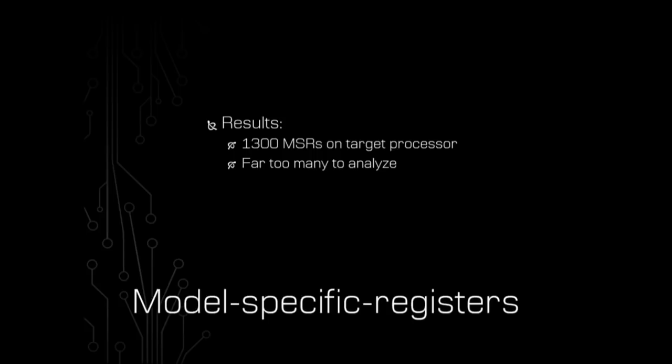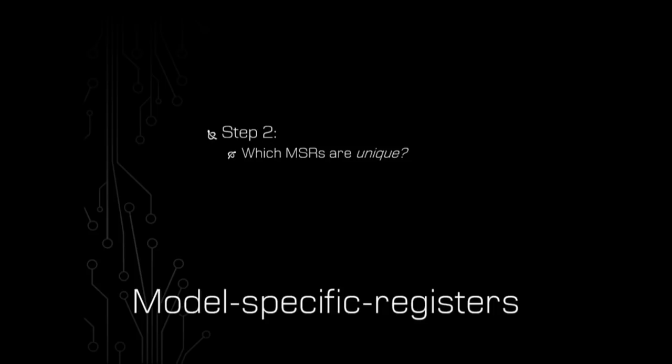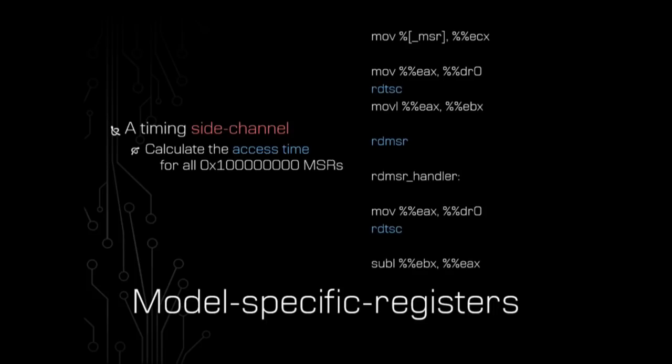When you do this on the VIA C3, you find an alarming number of MSRs — far more than would normally be on an X86 processor. We found 1,300 implemented MSRs on that processor, which is far too many to analyze by hand. So step two is figuring out which MSRs are actually interesting — which one should I be exploring?